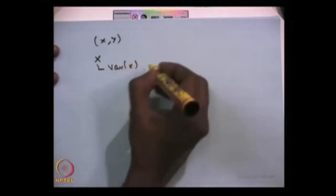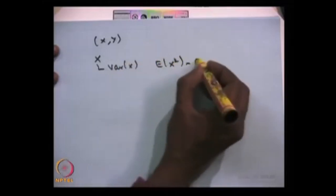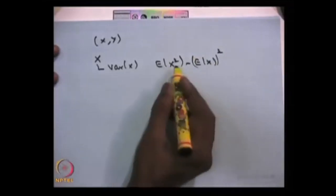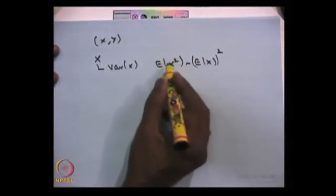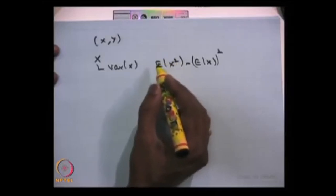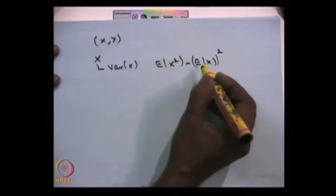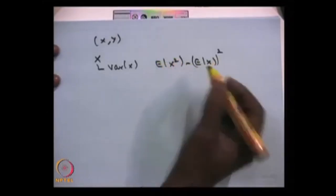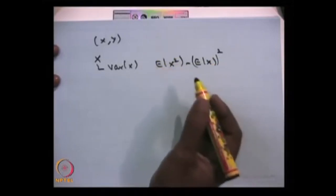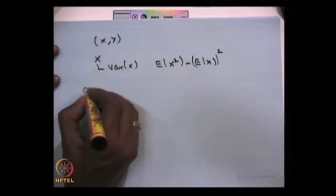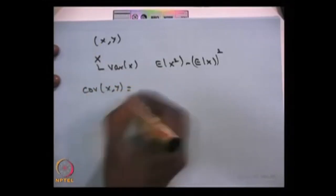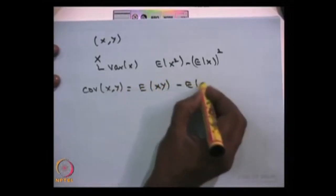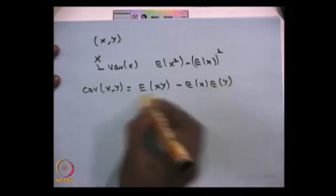Other than expectation, we can also find the variance of a random variable. Variance is the second-order moment: E[X²] minus (E[X])². Here, as long as E[|X|²] converges, you can obtain E[X²]. Once the second-order moment exists, all previous-order moments exist, but that does not imply higher-order moments exist. Now, the covariance of X and Y is defined as the expectation of X times Y minus the expectation of X times the expectation of Y, provided the expectations exist.